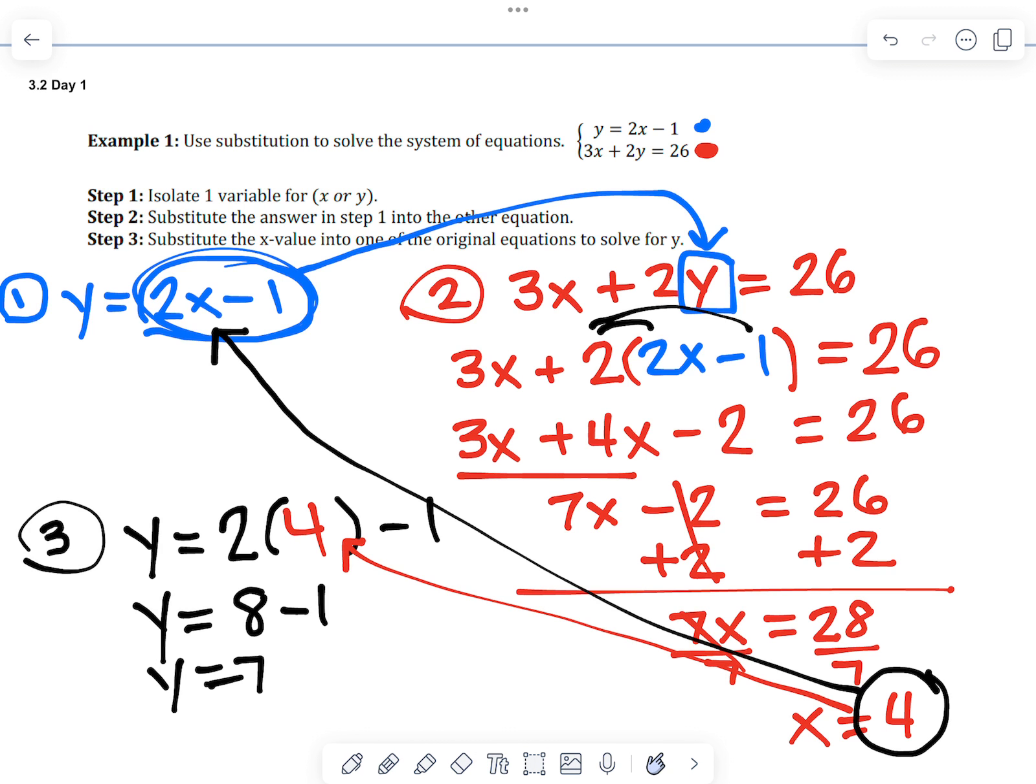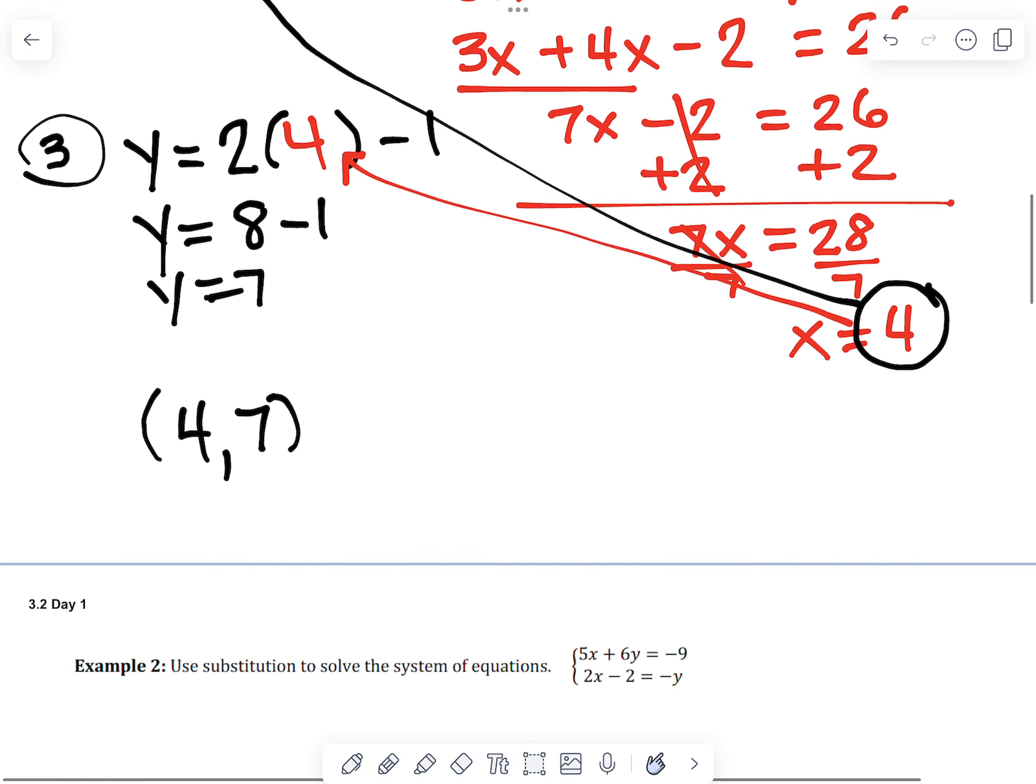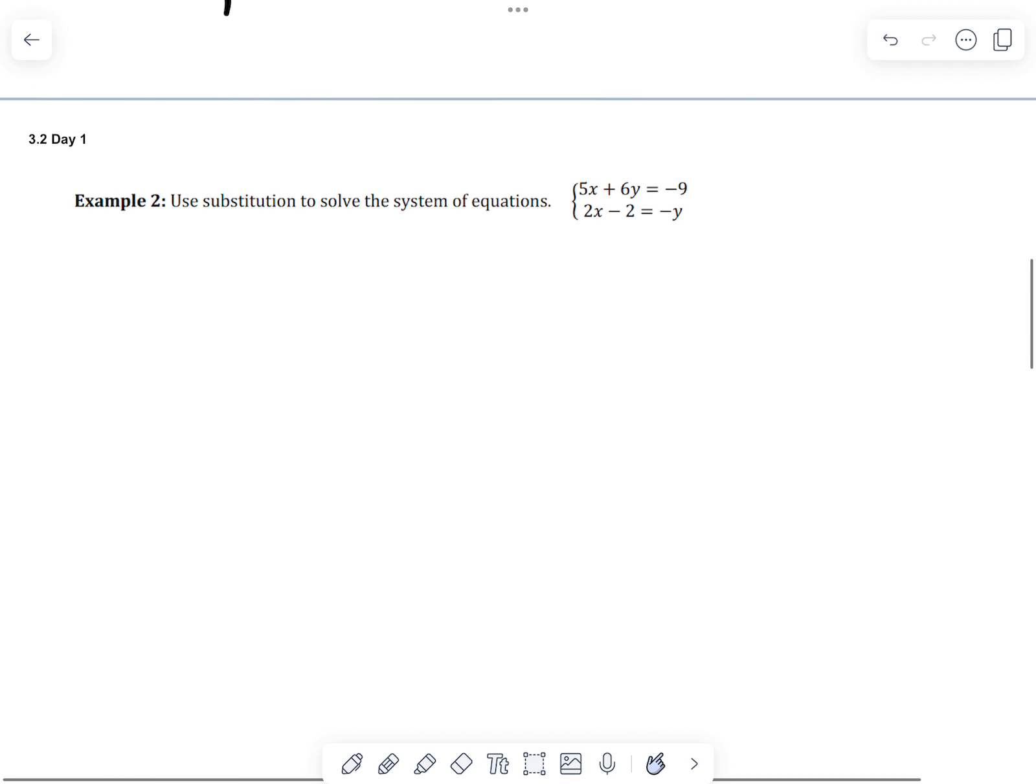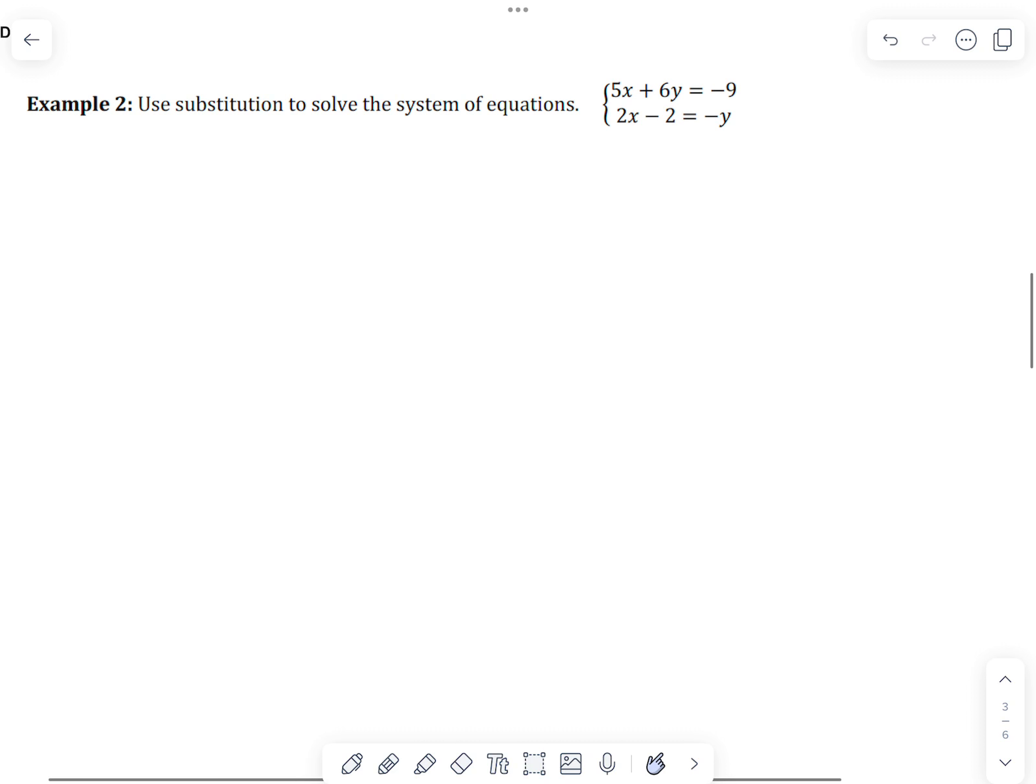So the solution is the ordered pair 4 comma 7. Let's do another one. This one's a little bit more challenging because both of the equations are not solved for one variable.